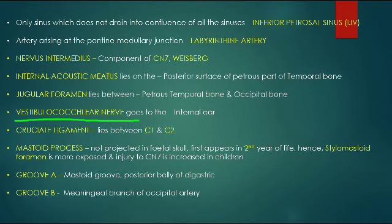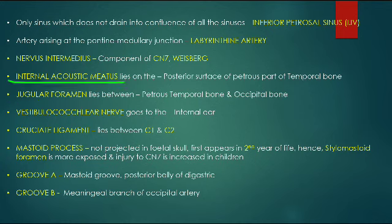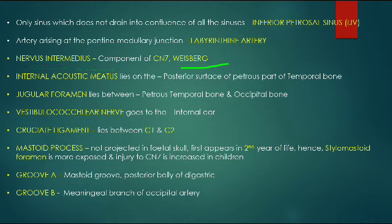Groove B is for the meningeal branch of the occipital artery. The cruciate ligament lies between C1 and C2. The jugular foramen lies between the petrous temporal bone and the occipital bone. The internal acoustic meatus is on the posterior surface of the petrous part of the temporal bone. The nervus intermedius is a component of CN VII, also called the nerve of Wrisberg - this is an important question that once appeared in the PGI Punjab exam.